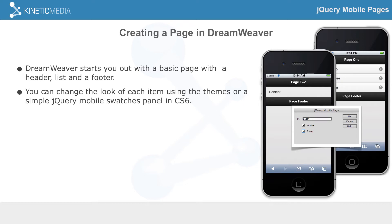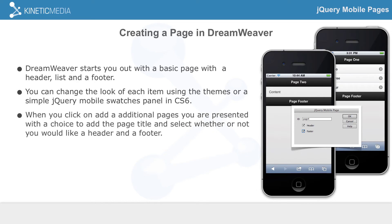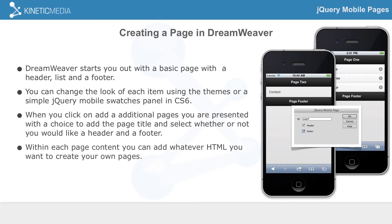You change the look by using themes. If you have CS6, they released a jQuery Mobile swatches panel, which is really nice for changing themes. You can also do this manually by code with code hints in CS5.5, but the mobile swatches panel makes it a whole lot easier. When you click to add an additional page, you're presented with the choice to add a page title and select whether you want a header or footer. Within each page you can place whatever HTML — video tags, audio tags, different layout tags, your own CSS.